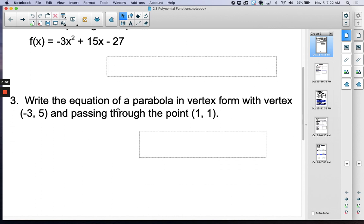And then the third one is write an equation of a parabola in vertex form. If you're given the vertex, it's (-3, 5), and this point is actually on the parabola. And again, there was a problem in the previous class on these three.